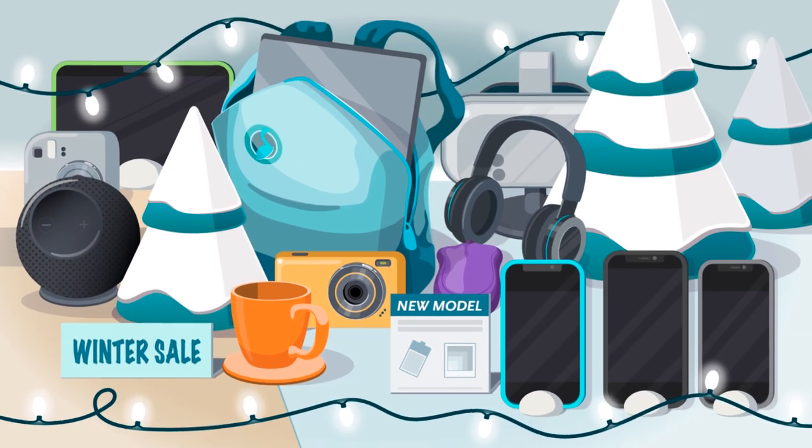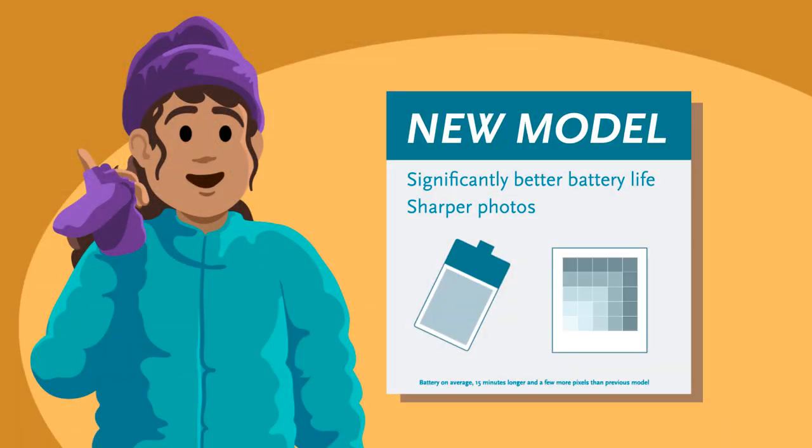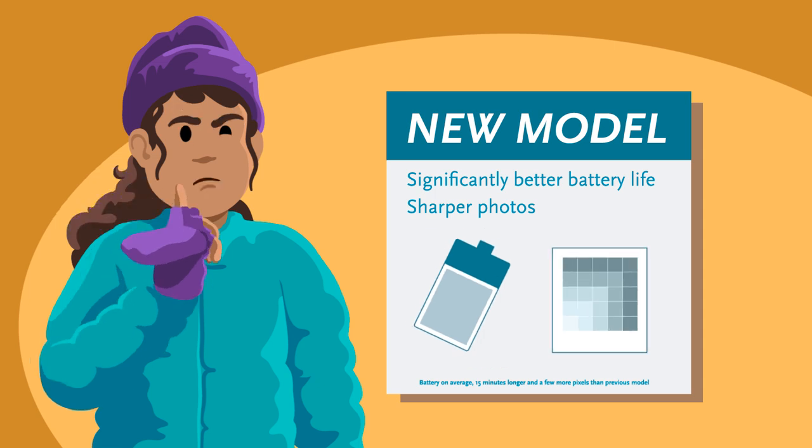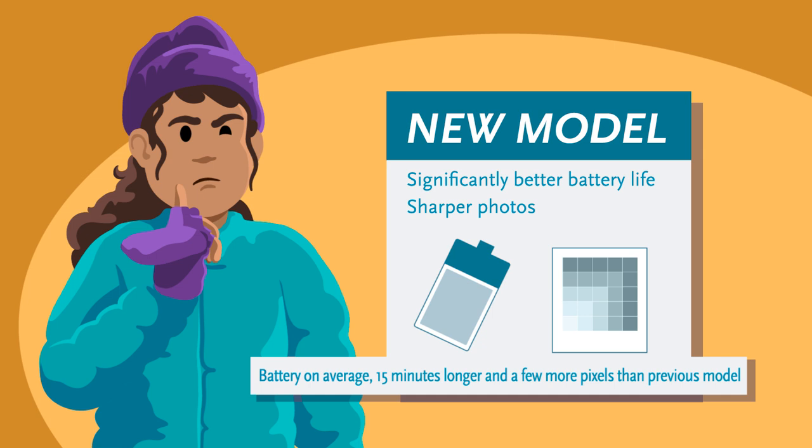You're considering a phone upgrade. The latest model promises significantly better battery life and sharper photos. The ad almost has you convinced, but then you notice the fine print. The new model has a battery life that is on average 15 minutes longer than the old one, and just a few more pixels.